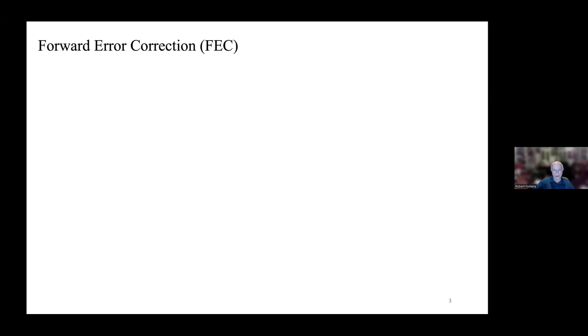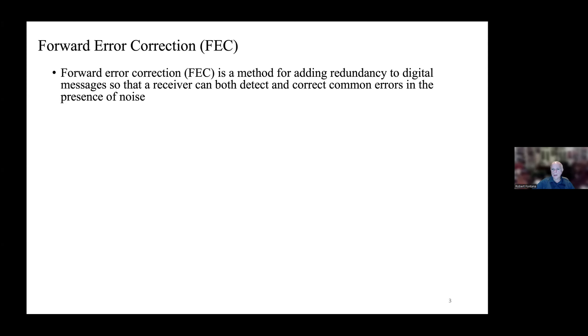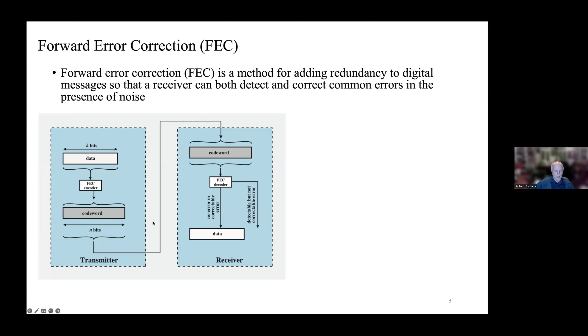Let's talk about forward error correction. It works because digital communication signals can embed additional information to allow error correction of the received waveform on the other end. It's called forward error correction because we're only looking at a forward direction — I transmit from my location, it's received at another. You may be familiar with ACK/NAC-type communications where the other person can request a retransmission; this is one-directional only, so if it doesn't decode on the other end, it's lost. Forward error correction is a method of adding redundancy to digital messages so that a receiver can both detect and correct common errors in the presence of noise.